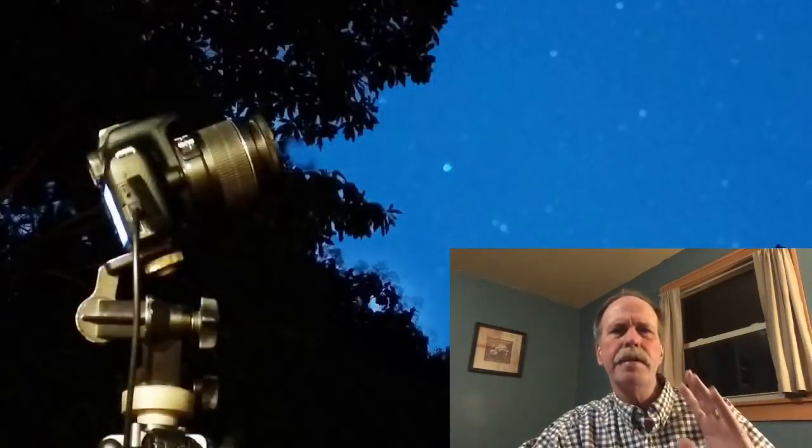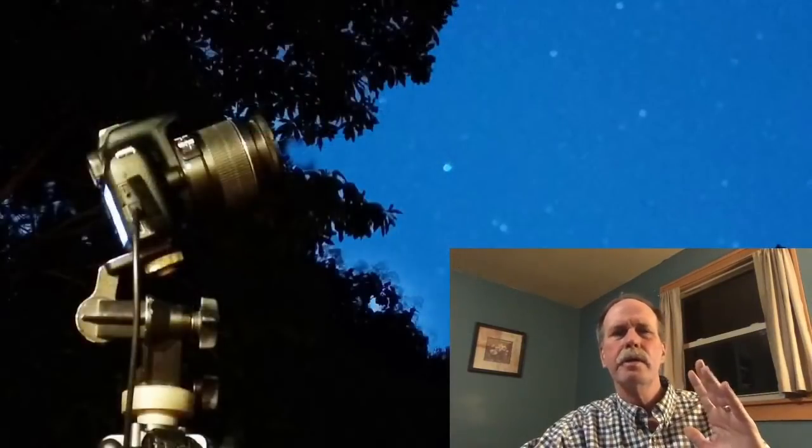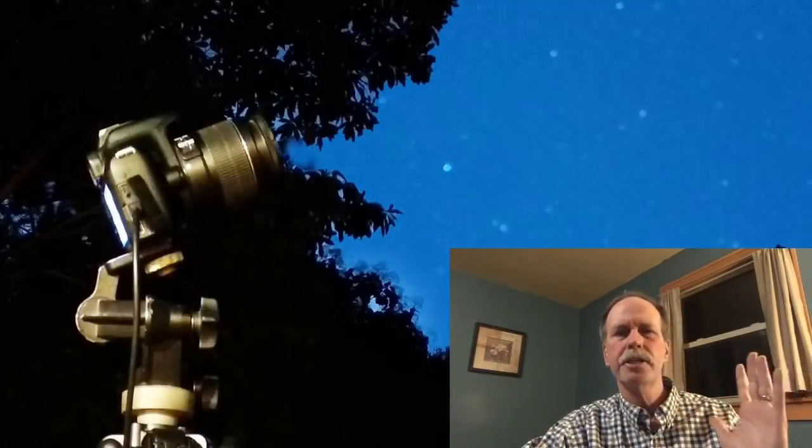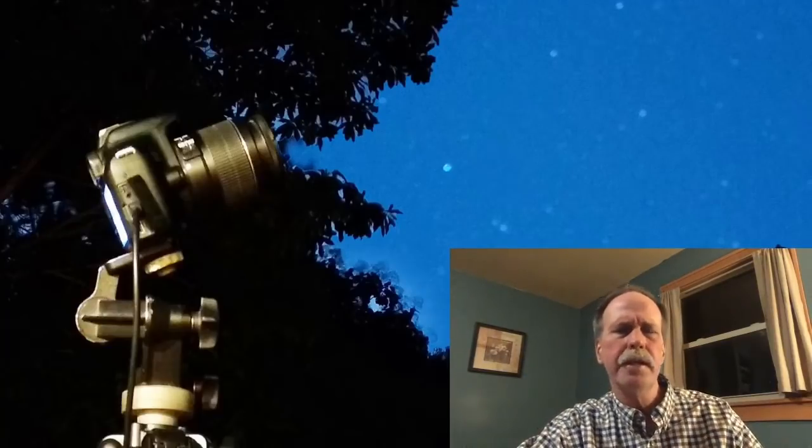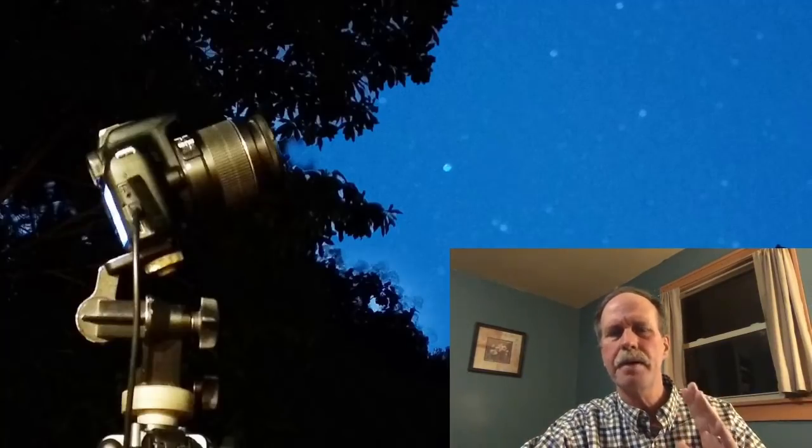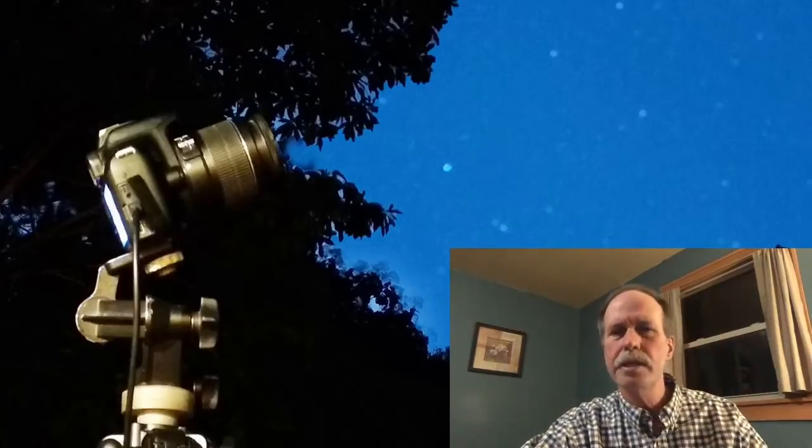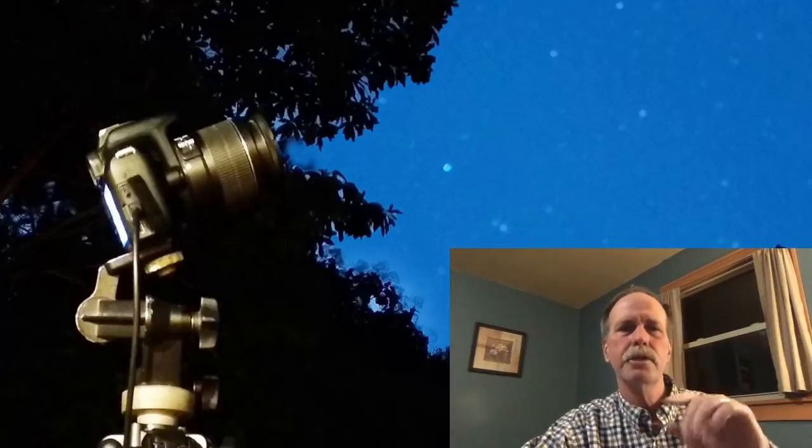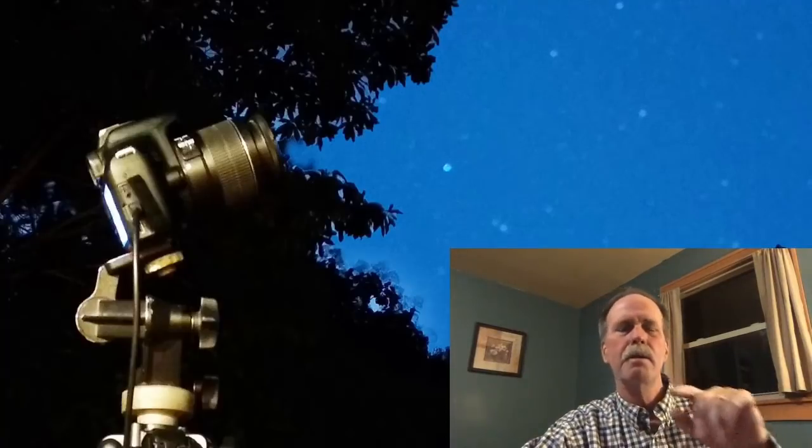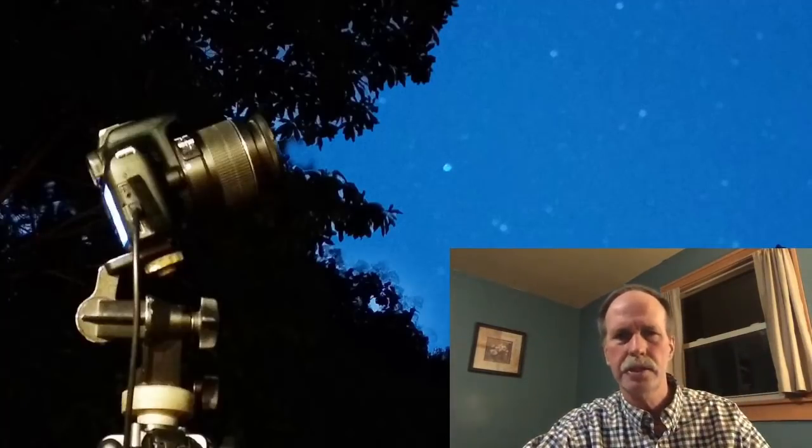If we have a camera mounted on an equatorial mount and we're rotating that mount in right ascension to match the rotation of the earth, all we're going to get is a star field. We're not going to get any star trails. However, if we put the camera on a standard tripod and point it more or less towards the north, we will get star trails with a time exposure and those circular star trails will be centered on the northern celestial pole.